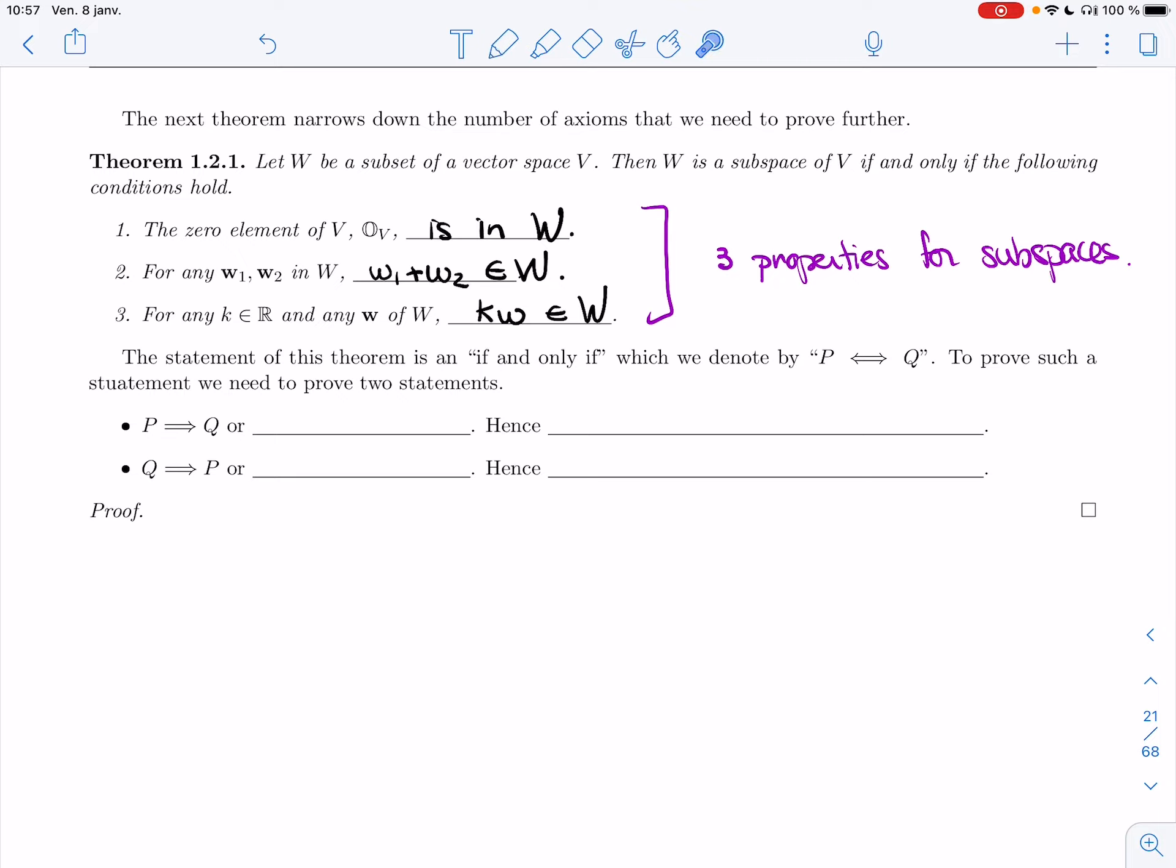So let's prove this, but this statement is an if and only if. It's an if and only if, so that says that the first part, W is a subspace of V, is equivalent to these three properties being equal. To prove something like this, which we'll denote as P double arrow Q, to prove such a statement, we need to prove two statements, the two directions.